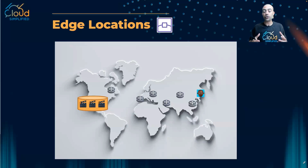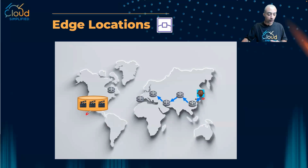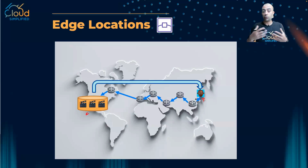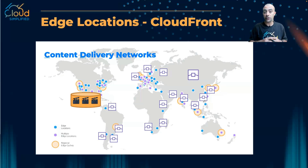Imagine a user who wants to watch a certain movie from a content provider, but this user is sitting very far from where the movies are stored. The request travels through the internet infrastructure and routers, which is not very reliable. The path taken to reach the destination may differ from the path used to send the movie back, and the more distant the user is, the more latency and delay occurs. If this user is watching in full HD or 4K, they will not get the best experience — and that's why we introduce CloudFront.